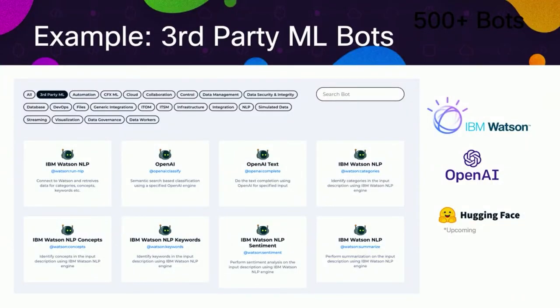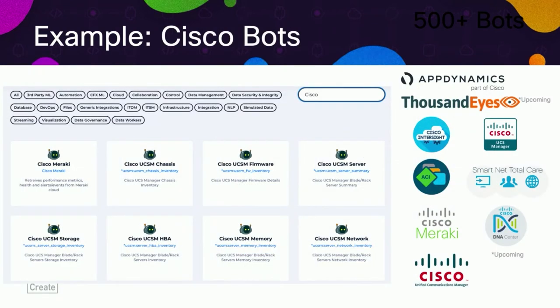Here is an example of ML bots where we have integrations with third-party services. You can click on or search for a certain bot. We have integrations with Watson, OpenAI, and Hugging Face is also upcoming. For Cisco integrations, we have bots for AppDynamics, InterSite, UCS, Meraki, and so on — we have built a lot of Cisco bots. All of these bots can be used in building complex workflows and data pipelines.